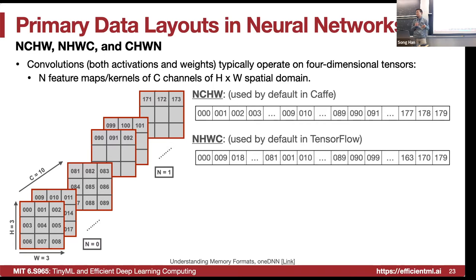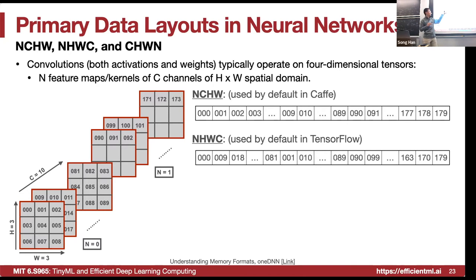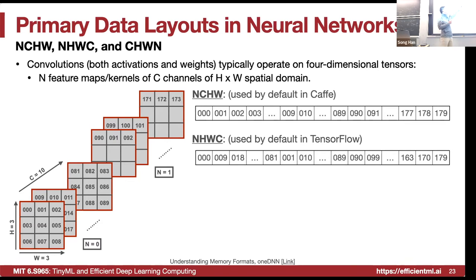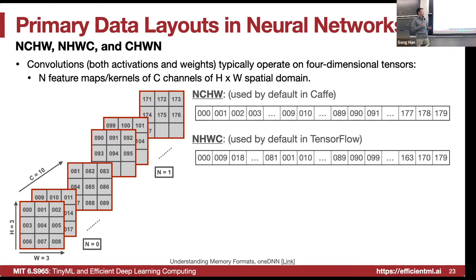Pointwise convolution benefits from the NHWC format, since it performs reduction in the channel dimension — a 1×1 convolution with no spatial locality, only channel-level locality, doing a matrix-vector product to project one channel to another. By contrast, NCHW is better for spatial convolutions (3×3, 5×5, 7×7) because H and W spatial locality is better exploited.